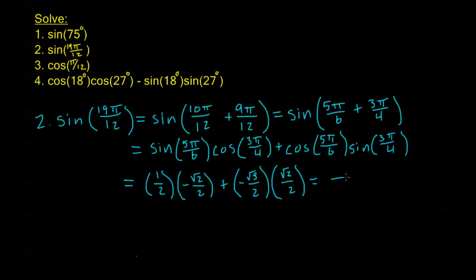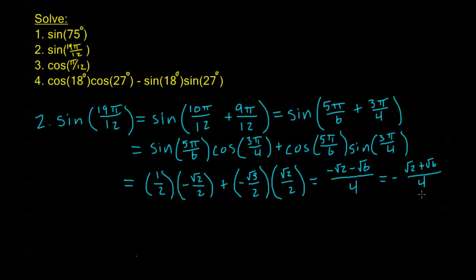Multiplying this out, with a common denominator of 4, we have negative square root of 2 minus square root of 6 over 4. You could also write this as negative root 2 plus root 6 over 4. It turns out that 19π over 12 and 75 degrees both have the same reference angle — we see the same value just in a different quadrant, so it's negative.